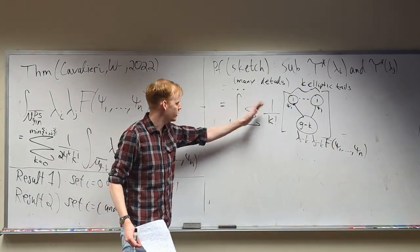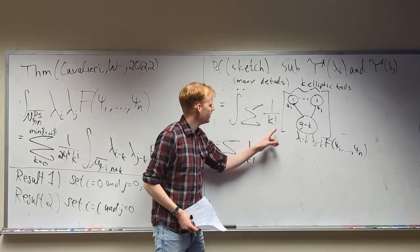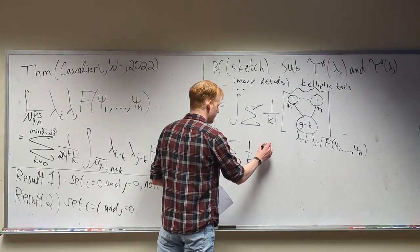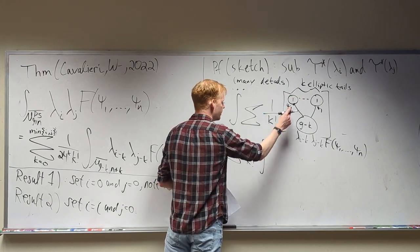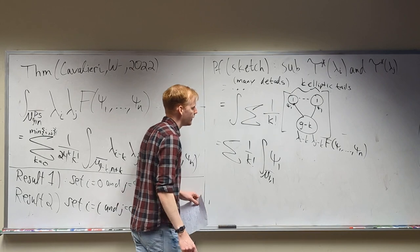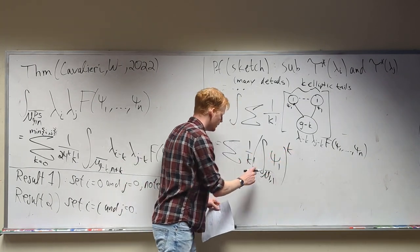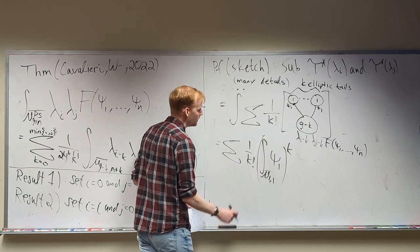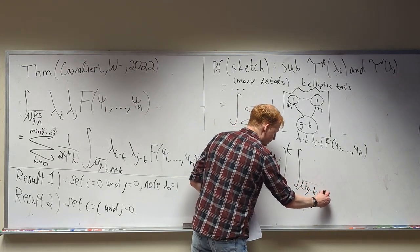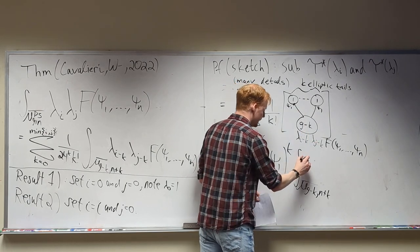When you're integrating a sum, just like with Riemann integrals, you can distribute to each term individually. Also, with these integrals, if you're integrating the class of a curve, you can integrate each component on that curve individually and then multiply them together. For example, I can take the integral of that component, which is a curve of genus 1 with 1 marked point with a psi_1 living on it. I have k elliptic tails, so I get k products of these, giving me that integral raised to the power k.